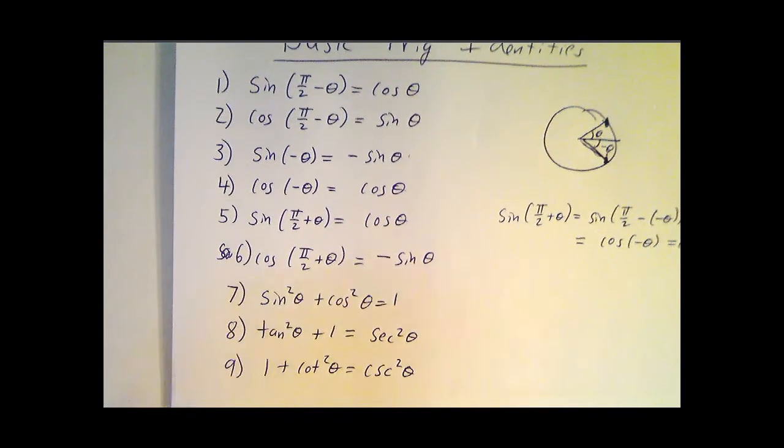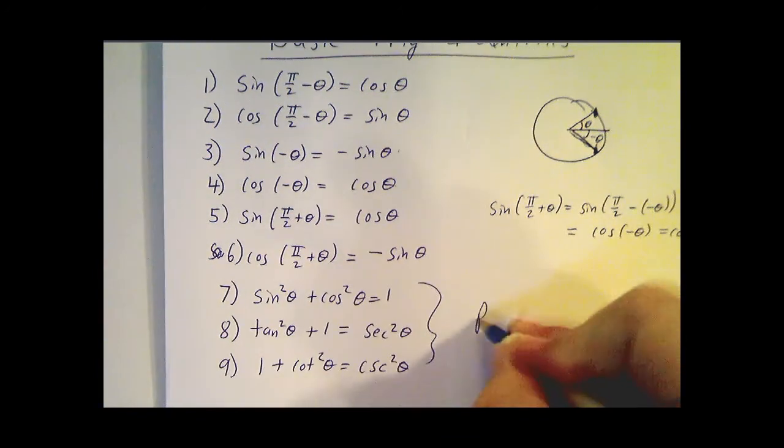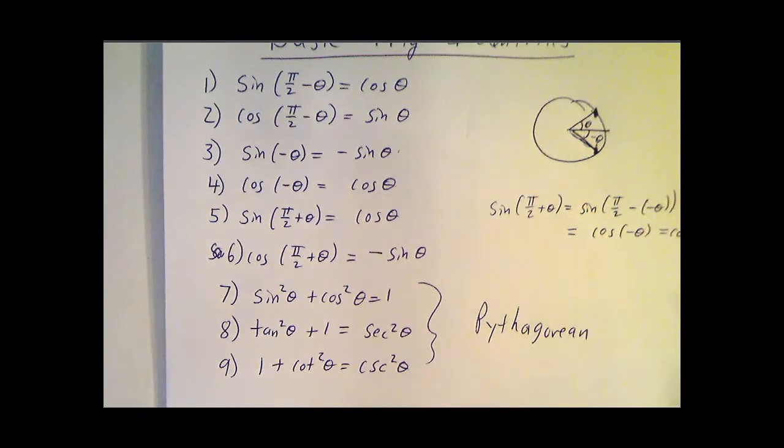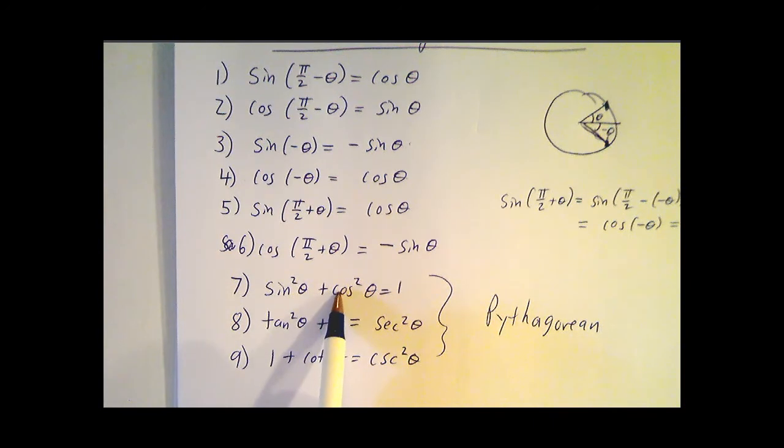And last, we've got the identities, these are sometimes called the Pythagorean identities. If you know the sine, you can figure out the cosine because sine squared plus cosine squared is 1. If you know the tangent, you can figure out the secant or vice versa. If you know the cotangent, you can figure out the cosecant or vice versa.